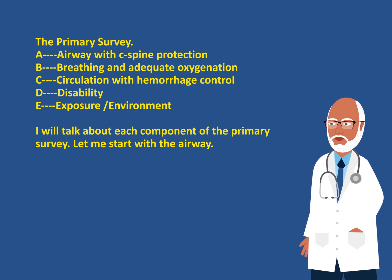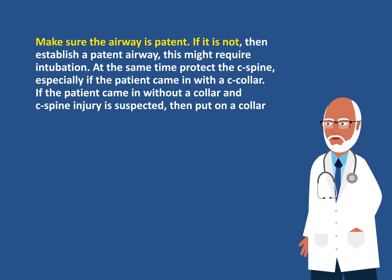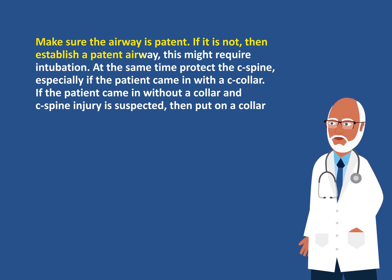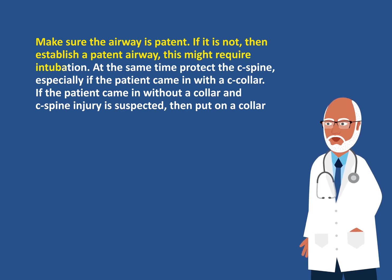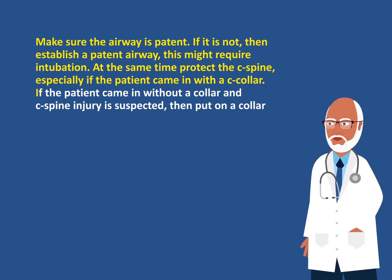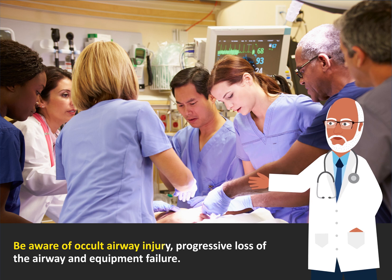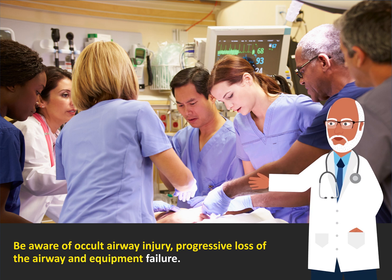Let me start with the airway. Make sure the airway is patent. If it is not, then establish a patent airway. This might require intubation. At the same time, protect the C-spine, especially if the patient came in with a collar. If the patient came in without a collar and C-spine injury is suspected, then put on a collar. Be aware of occult airway injury or progressive loss of the airway and equipment failure.